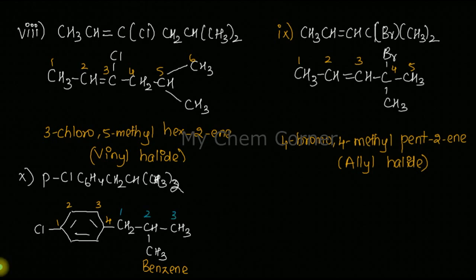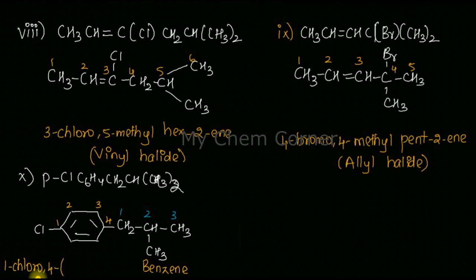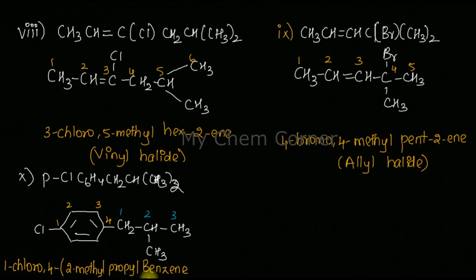The side chain is named by the same rule. Writing the name: the chloro group is at position one of the ring. The entire side chain stands at position four of the benzene ring. The side chain is a three-carbon chain — propyl, since benzene is already the parent hydrocarbon. On carbon two of the propyl chain there is a methyl group: 1-chloro-4-(2-methylpropyl)benzene. Such halides are called benzyl halides.